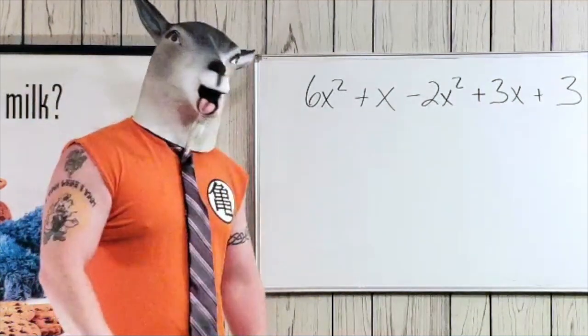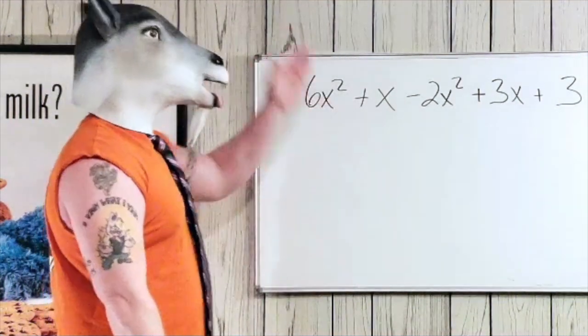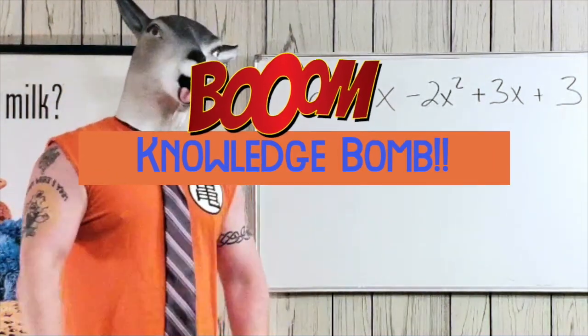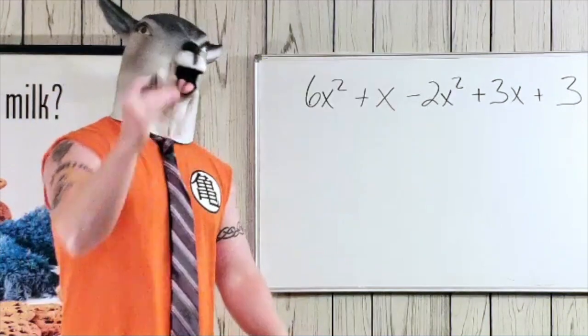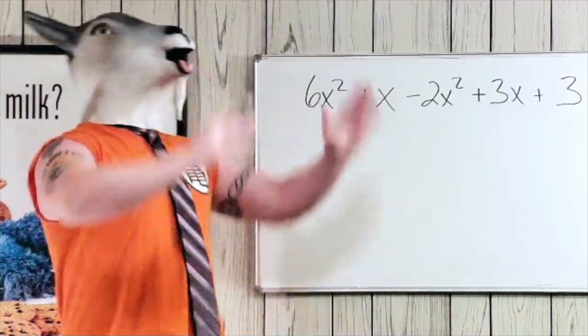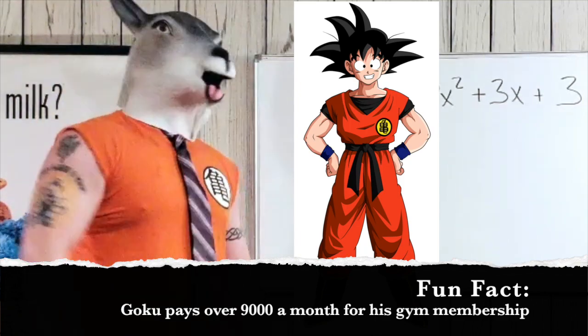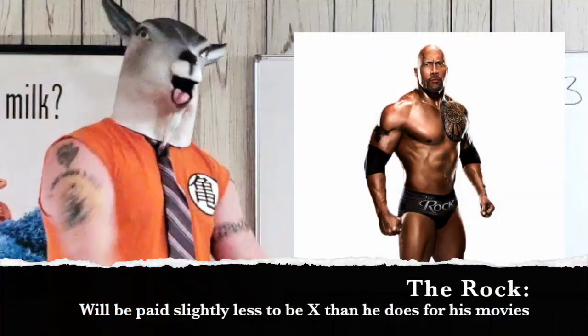The first thing you gotta know is that X squared and X are not the same. They're so different, they're completely different things. So everywhere we see X squared, we're gonna put in Goku. Now everywhere you see X, we're gonna put in Little Rock.